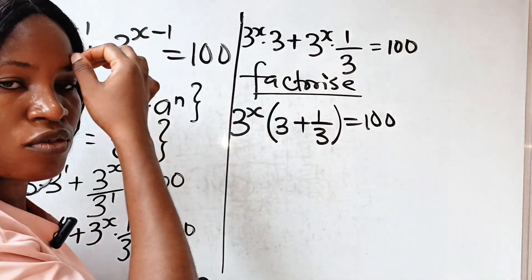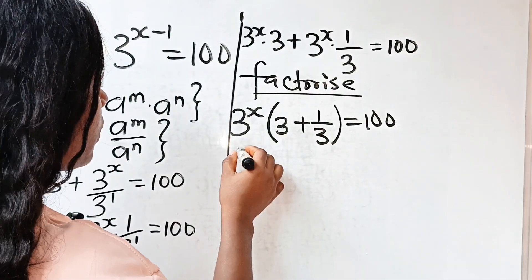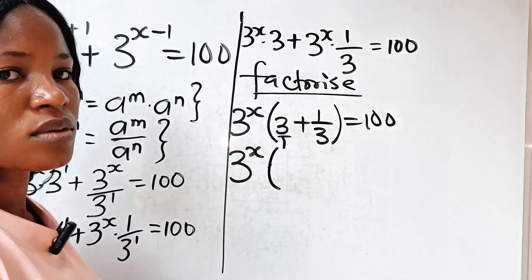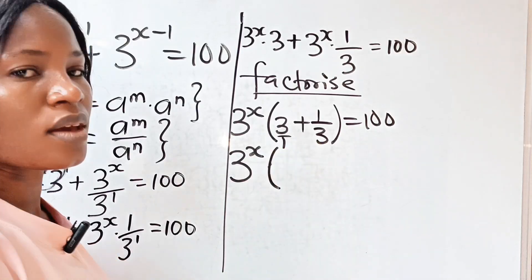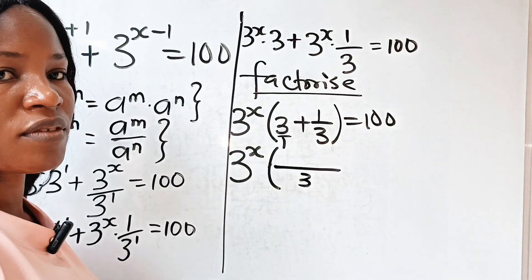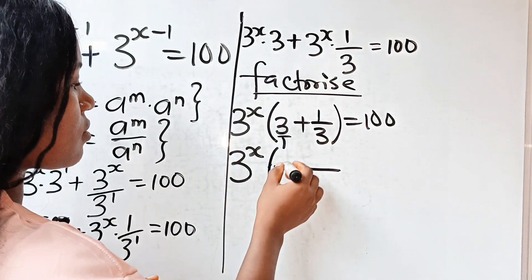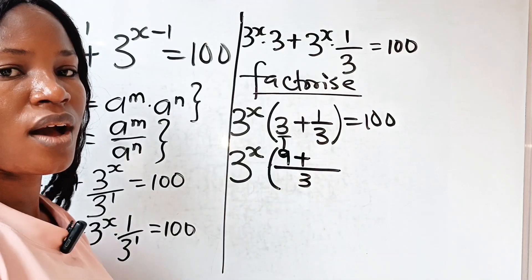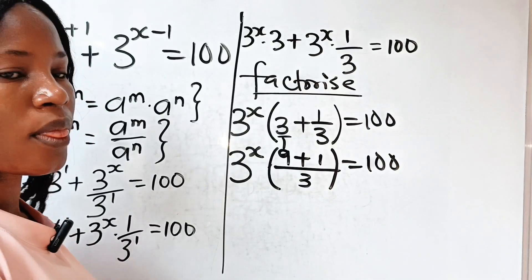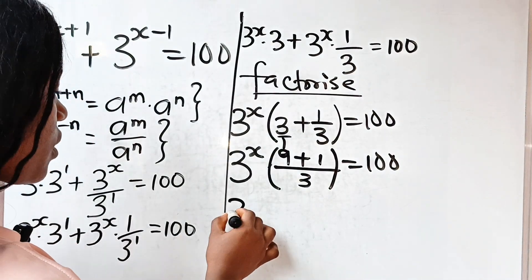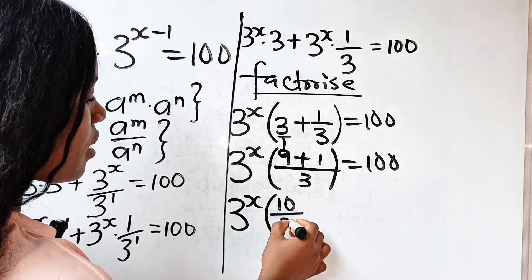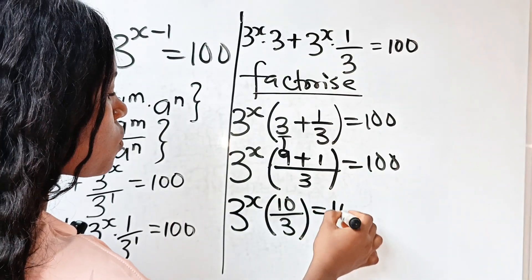Now we are going to solve the bracket first. We have 3 to the power of x in brackets. This gives us 3 over 1. The LCM of 1 and 3 is 3. When 1 divides 3, we have 3; 3 times 3 is 9. When 3 divides 3, we have 1; 1 times 1 is 1. So 9 plus 1 is 10, divided by 3, is equal to 100.